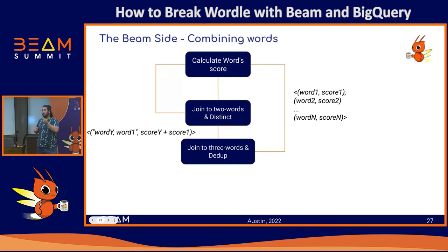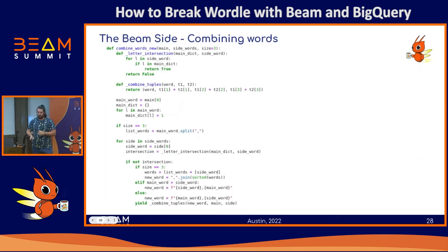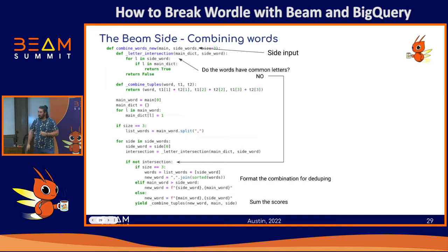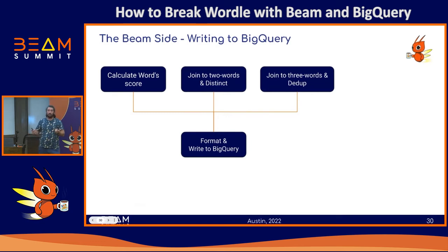Now that we have the combination of two words, we need to get the combination of three words. We again loop through all the scores for one element and join them together — our element is word Y and word one with a specific score, and we loop through all the words again and make combinations. As you can see, this generates a lot of elements, so that's why we needed those space-reduction benefits. Once we have all combinations with their scores, we just need to format everything and write it to BigQuery.